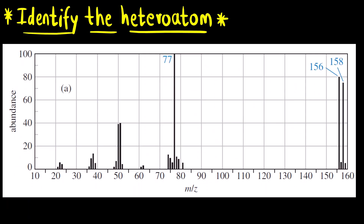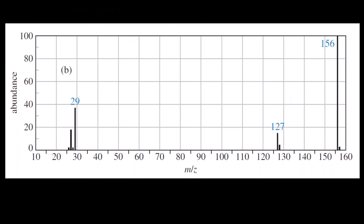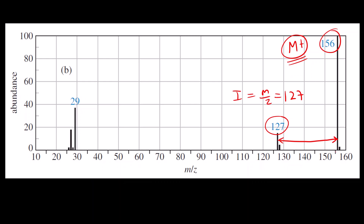Now, some practice questions are given where we must identify the heteroatom from graphs. In the first question, the M+ and M+2 ion peaks are marked — both are almost the same height, which is the case for bromine. In the second question, there is a peak at m/z = 127 and a large gap before the molecular ion peak, so the heteroatom is iodine.